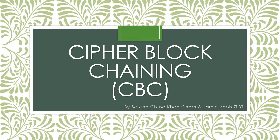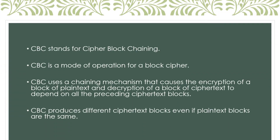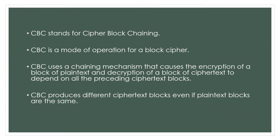This video is about Cipher Block Chaining mode, also known as CBC. CBC is a mode of operation for a block cipher. It uses a chaining mechanism that causes the encryption of a block of plain text and decryption of a block of cipher text to depend on all the preceding cipher text blocks. CBC mode produces different cipher text blocks even if plain text blocks are the same.